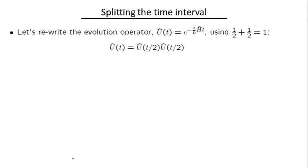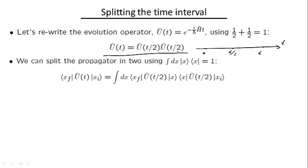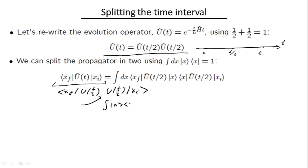A particularly simple way of splitting the time interval is to divide it in half. So we have the time axis from zero to T, divided into two pieces: zero to T/2 and T/2 to T. Therefore U(T) equals U(T/2) times U(T/2). Now if we focus on the actual propagator, which is the matrix element of this evolution operator between the initial point x_i and the final point x_f, we can write it as ⟨x_f| U(T/2) · U(T/2) |x_i⟩ and insert the resolution of identity in between.